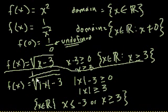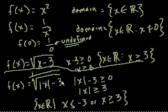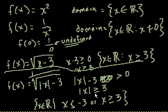Now what if we have 1 over the square root of the absolute value of x minus 3? Now not only does the expression in the denominator have to be greater than or equal to 0 — it can't be 0 either, because then you'd get the square root of 0, which is 0, giving you a 0 in the denominator. So it's like the previous two problems combined. The absolute value of x minus 3 must be strictly greater than 0, meaning x has to be strictly greater than 3 or strictly less than negative 3 — you just remove the equal signs.